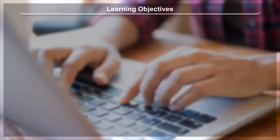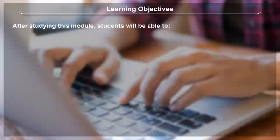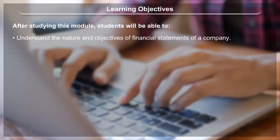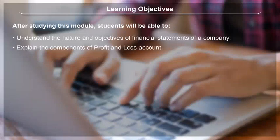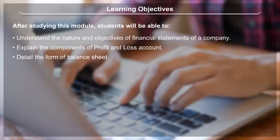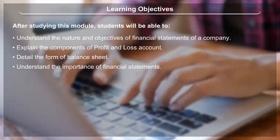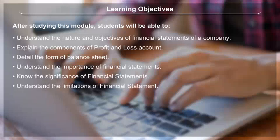Learning Objectives. After studying this module, students will be able to: understand the nature and objectives of financial statements of a company; explain the components of profit and loss account; detail the form of balance sheet; understand the importance of financial statements; know the significance of financial statements; and understand the limitations of financial statements.